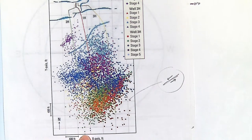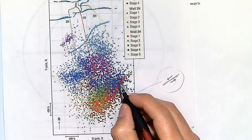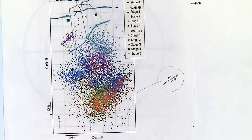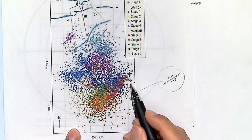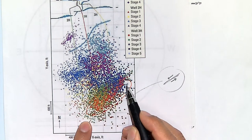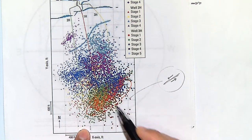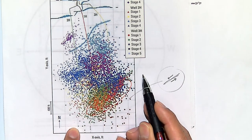Look at the red cloud as an example — it's a microseismic cloud that's elongated in one direction. It's telling you the expected orientation of the fracture. If it's longer in this direction than that one, the fracture very likely grew further in that direction. Notice also that these fractures are not exactly perpendicular to the wellbore.